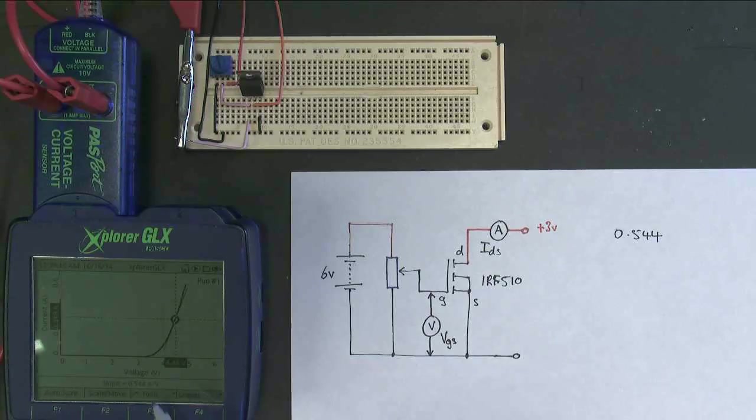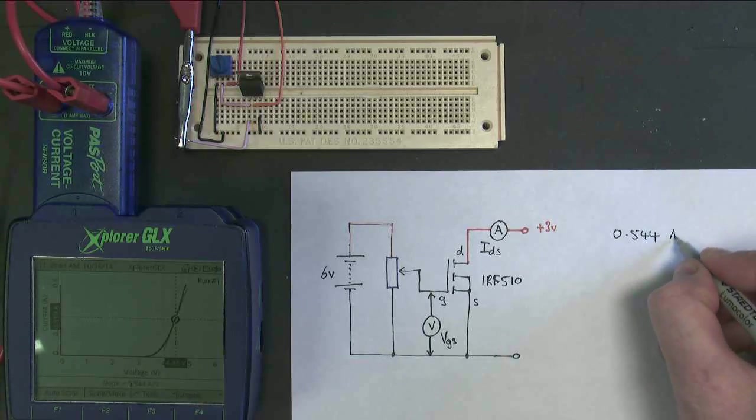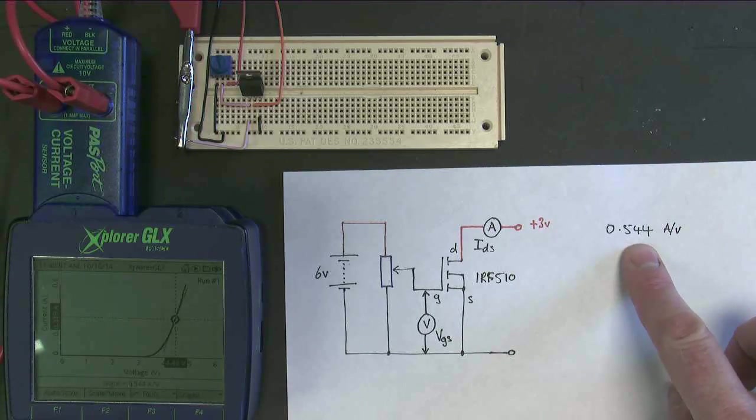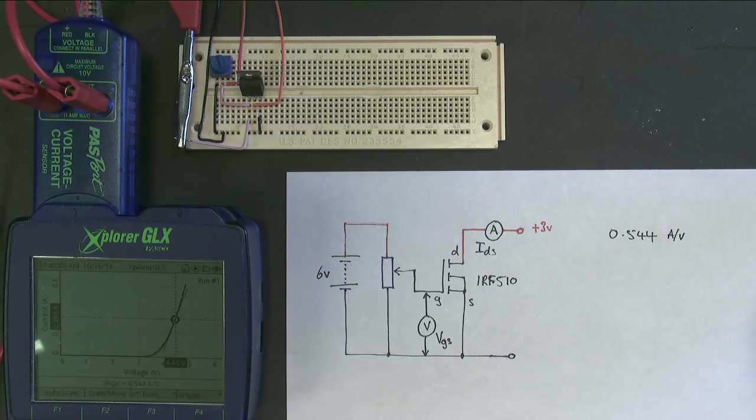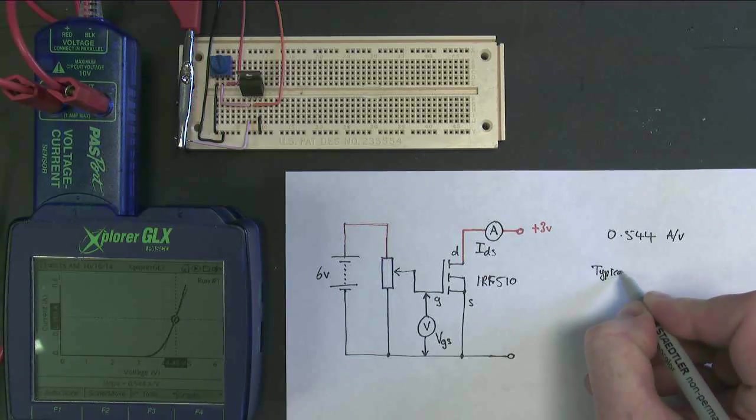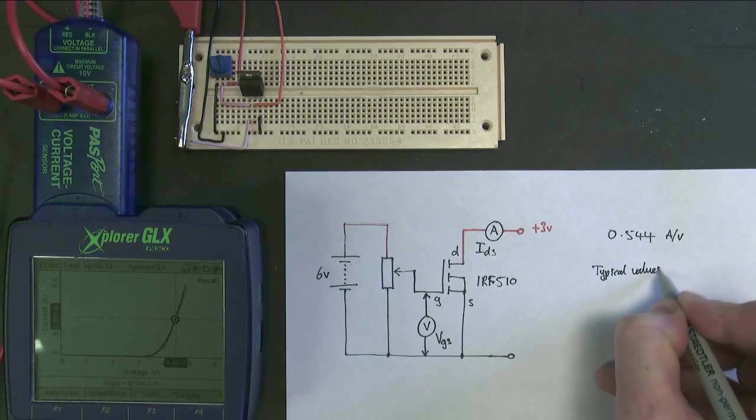And if we take a look at its units, they're amps per volt. So what this means is that the MOSFET, when it's conducting, is increasing the current through the MOSFET at a steady rate as I increase the gate source voltage. At about half an amp for every increase in one volt of the gate source voltage. I've actually got some values on here, which I'm going to also take down.